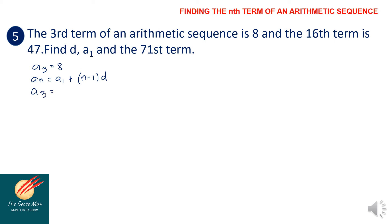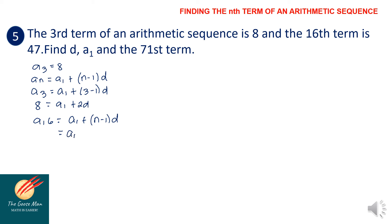A sub 3 equals a sub 1 plus (3 minus 1) times d, giving equation 1: 8 equals a sub 1 plus 2d. For the 16th term, a sub 16 equals 47, so equation 2: 47 equals a sub 1 plus 15d.